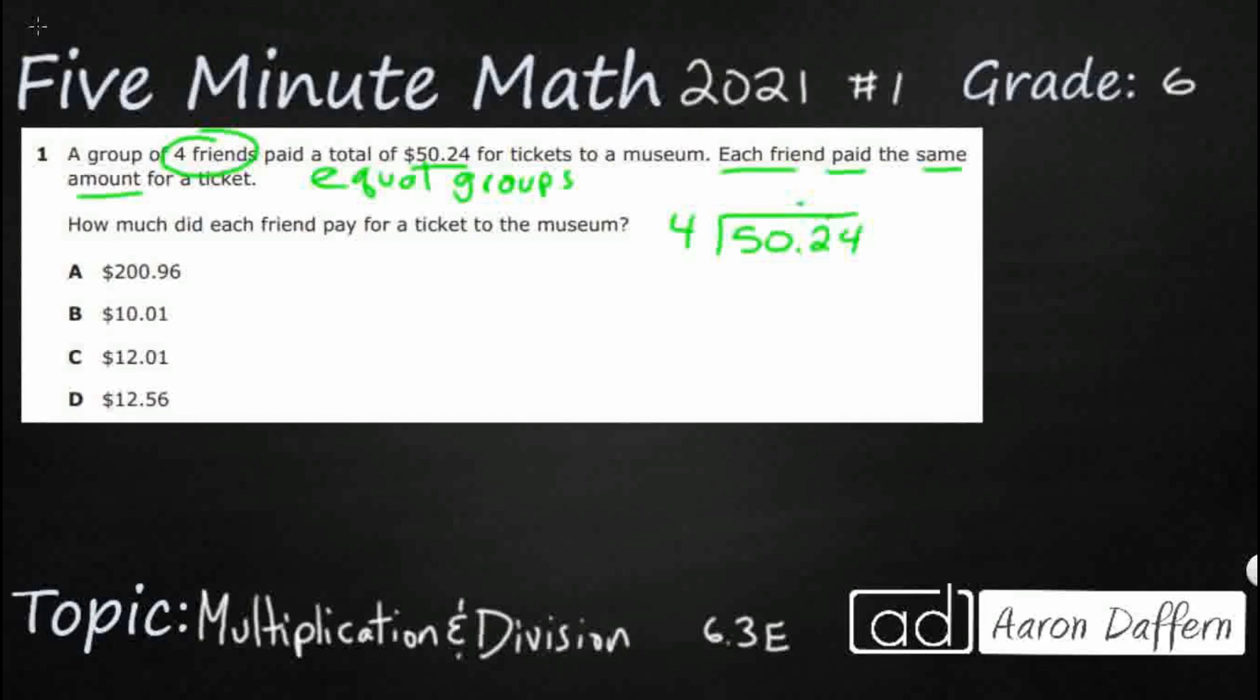So four, and we'll start with each number once. Four goes into five once, so that's going to be four. Remember, we only bring out one digit at a time.